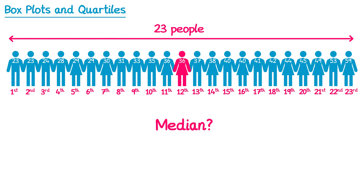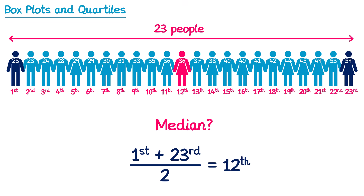You could think of the person in the median position as being at the midpoint of the first position and the last position. To find the midpoint of two numbers you add them together and divide by two. So if we want the midpoint of the first and the 23rd position, we add together 1 and 23 and then divide by two. One plus 23 is 24, and half of 24 is 12. So this tells us that the midpoint of the first and the 23rd position is the twelfth position.